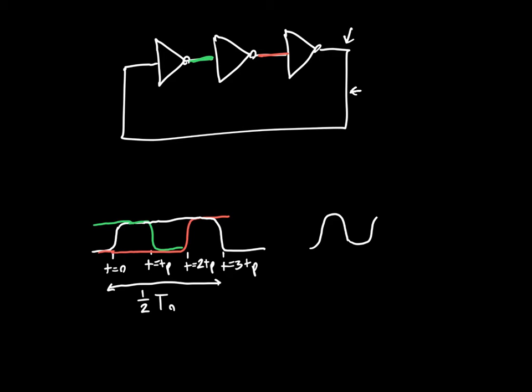And so the time that it takes for one full oscillation, if we look at any one of these nodes, this node is going to wait for 3tp, then it's going to go down 3tp, up 3tp. So this time is 3 times tp. This time is 3 times tp. And this time is 3 times tp.